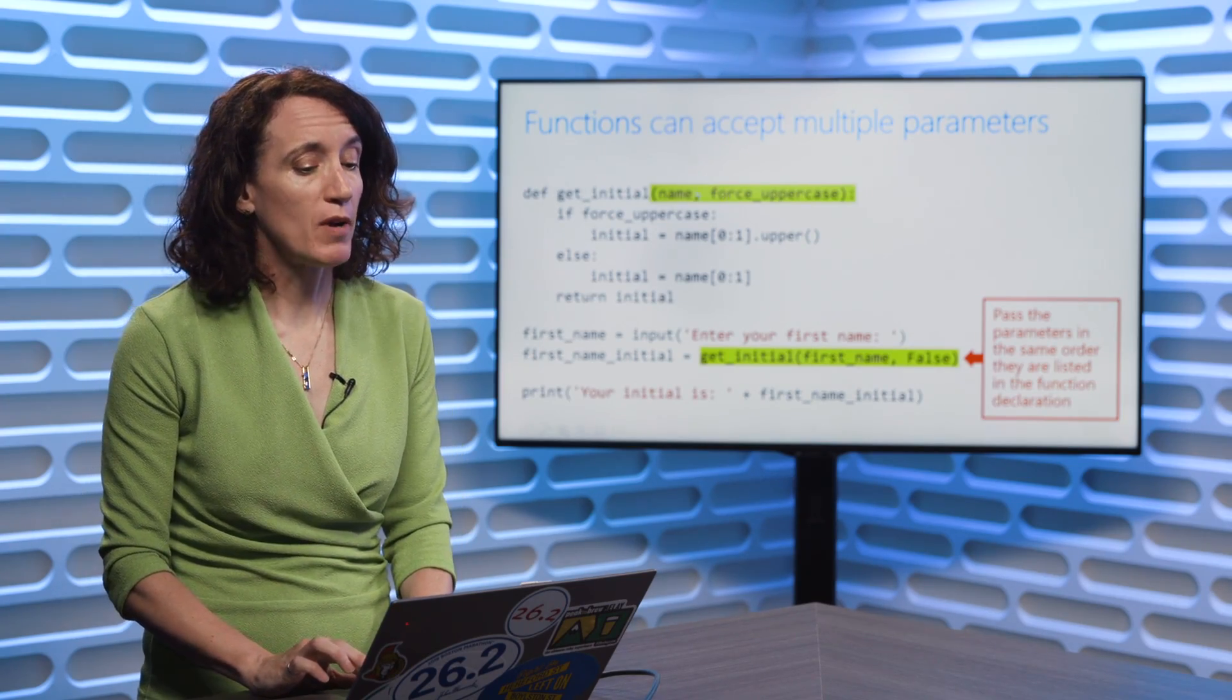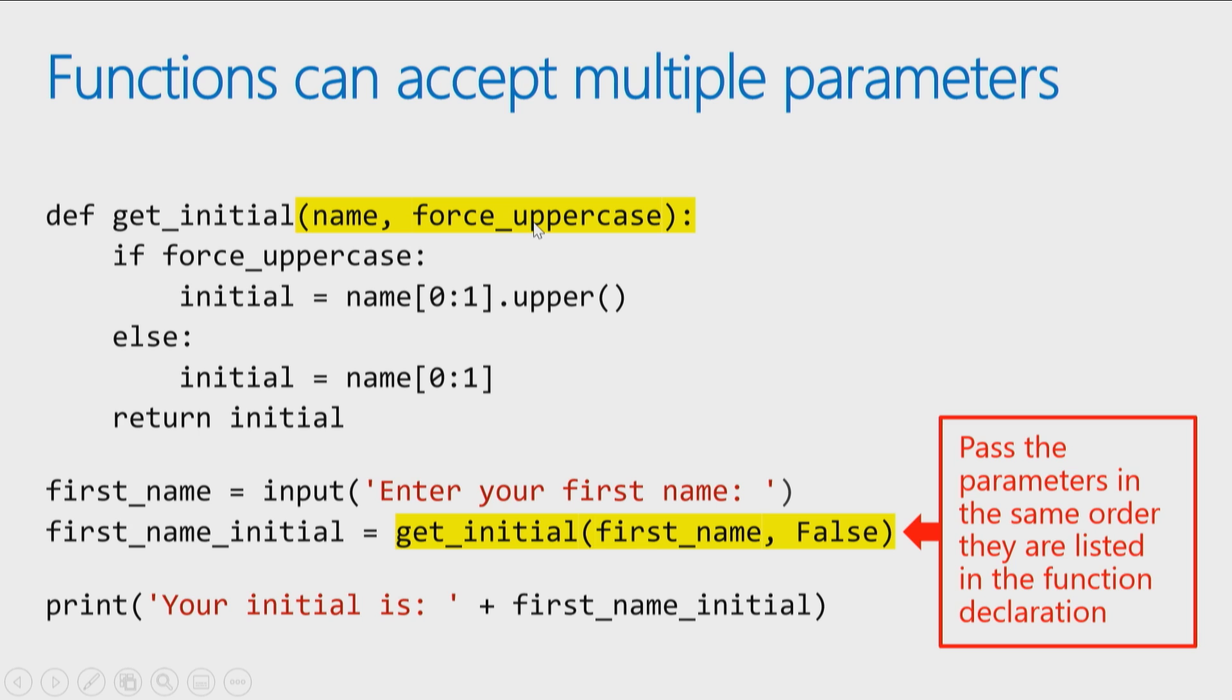So you'll notice I have the parameter name and the parameter forceUppercase. When I call it, I pass in the first name, the value for name, and I pass in false, the value for forceUppercase in that order.